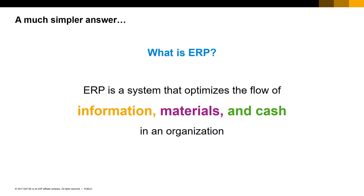Everything an ERP does — in sales, procurement, manufacturing, finance, or whatever — everything an ERP does, it does to optimize the flow of information, materials, and cash.